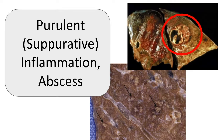An abscess is a localized collection of purulent inflammatory tissue which is buried in a tissue, organ, or confined space. This can be produced by seeding of pyogenic bacteria into a tissue. The abscess will have a centralized area of necrotic leukocytes and tissue cells, and there will usually be a zone of preserved neutrophils surrounding this necrotic focus. Outside of this region there may be vascular dilation and parenchymal or fibroblastic proliferation, which is an indication of chronic inflammation and repair. Over time the abscess may become walled off and ultimately replaced by connective tissue.